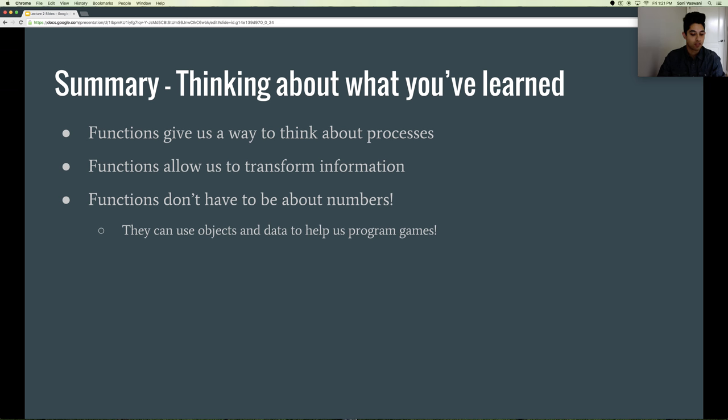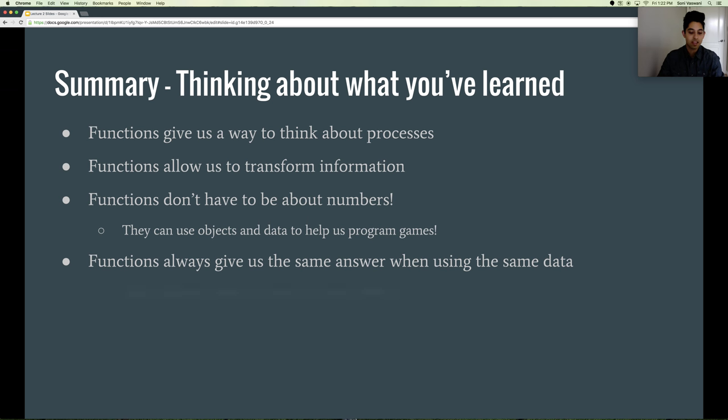Part of the definition of a function is that you always get the same answer whenever you call a function with the same arguments. The value returned by the function, in other words what the function is doing, shouldn't change regardless of anything you may have already computed. What that means is that each and every time, we know what we're getting with that function.